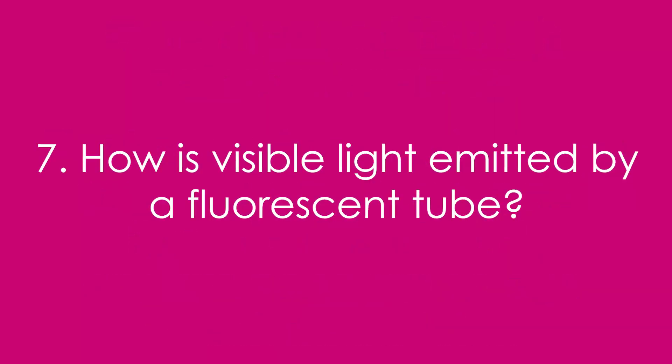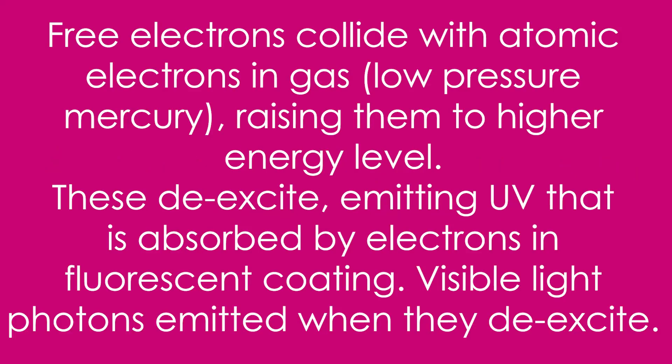Seven, how is visible light emitted by a fluorescent tube? First, the free electrons collide with the electrons in the gas, that's low pressure mercury usually, raising them to a higher energy level.